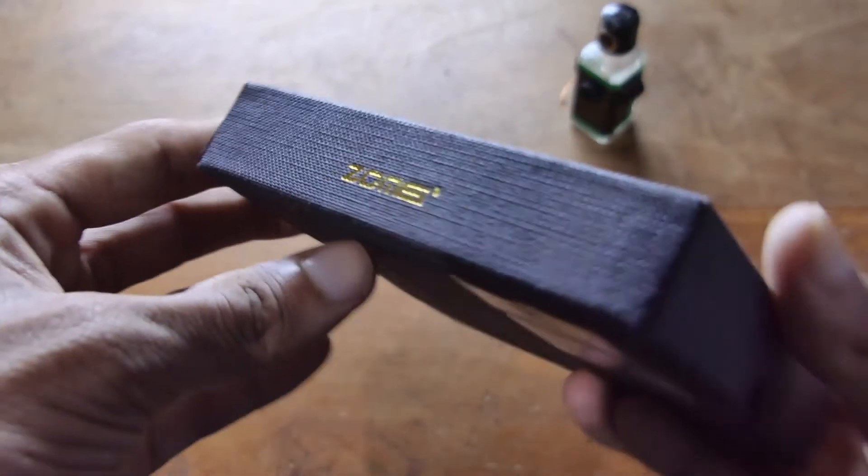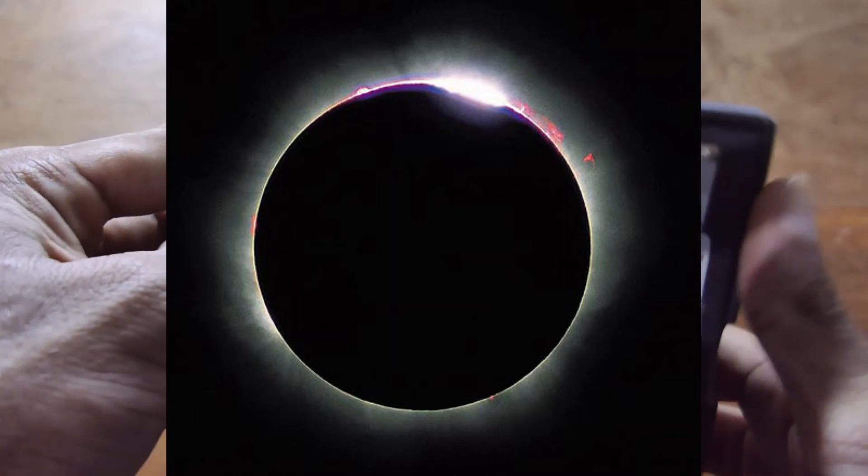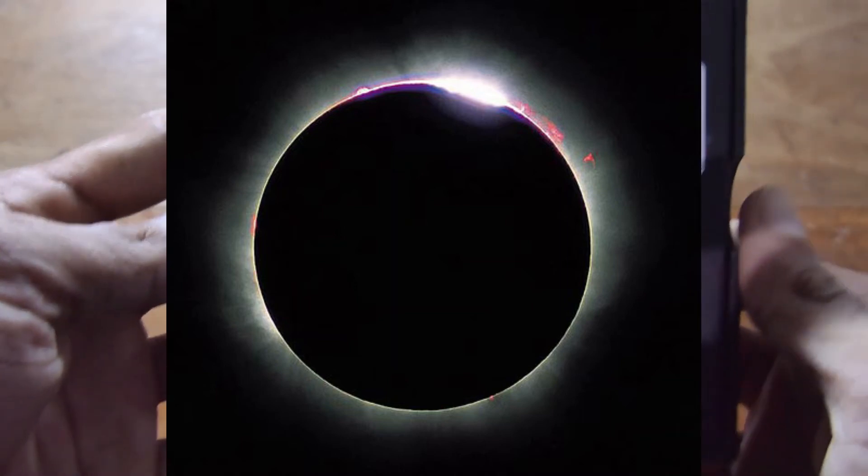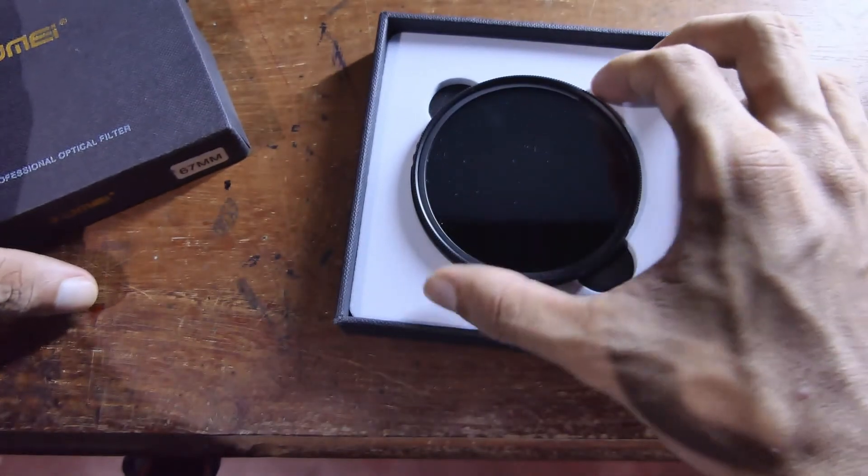The cons are you can't adjust the brightness of the sun or the color, and as far as I've heard, capturing Bailey's Beads could be difficult. On the other hand, the ND filters offer you the control over the brightness and the color management of the scene, unlike the solar filters.